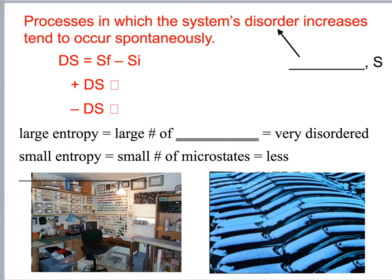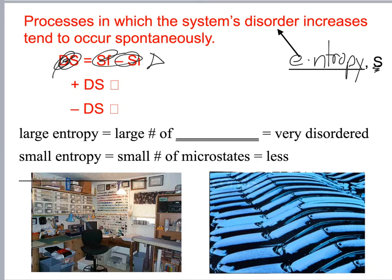Processes in which the system's disorder increases — disorder is entropy, which we refer to as S. Delta S equals the final entropy minus the initial entropy.